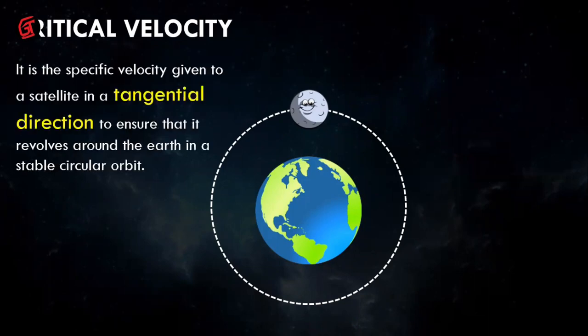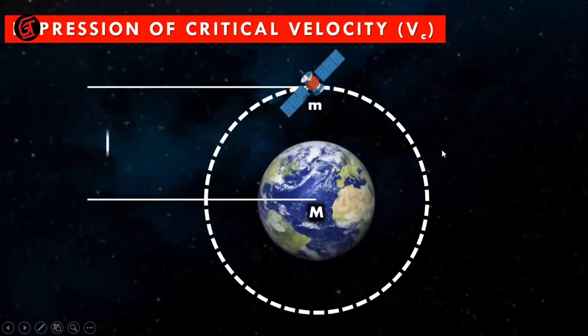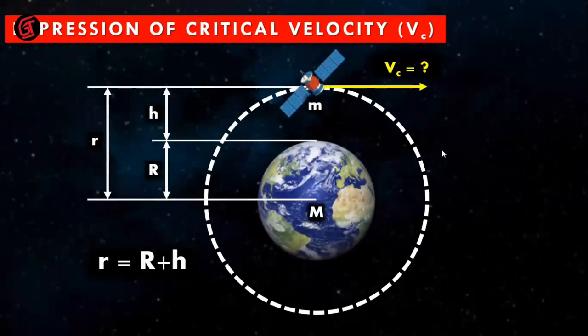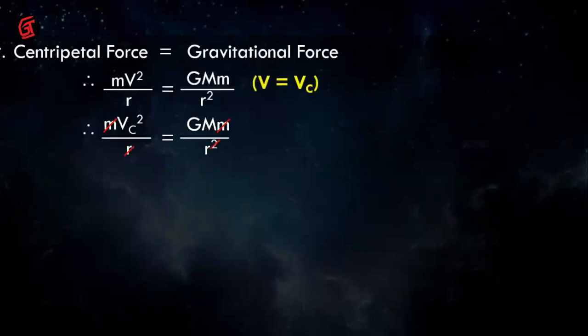This is called critical velocity — the velocity at which a satellite travels tangentially to the earth, like a tangent line touching the edge of a circle. The moon's motion is an example of this tangential direction. The expression for critical velocity is denoted as v. You can revise problems using centripetal force and gravitational force.